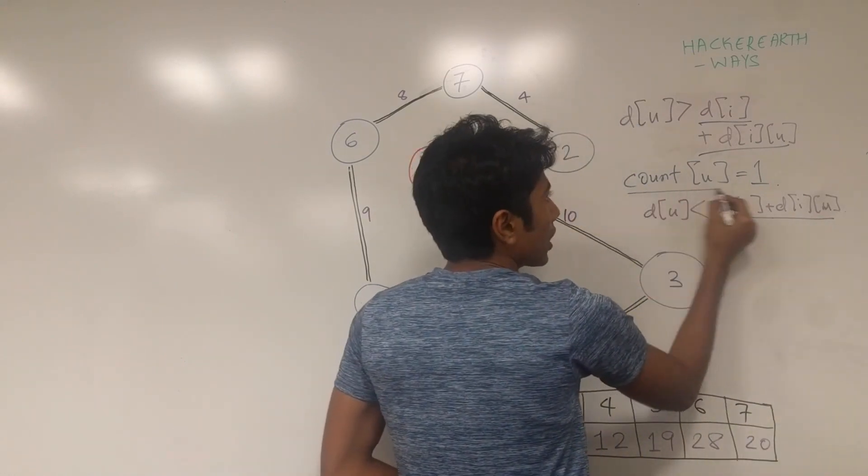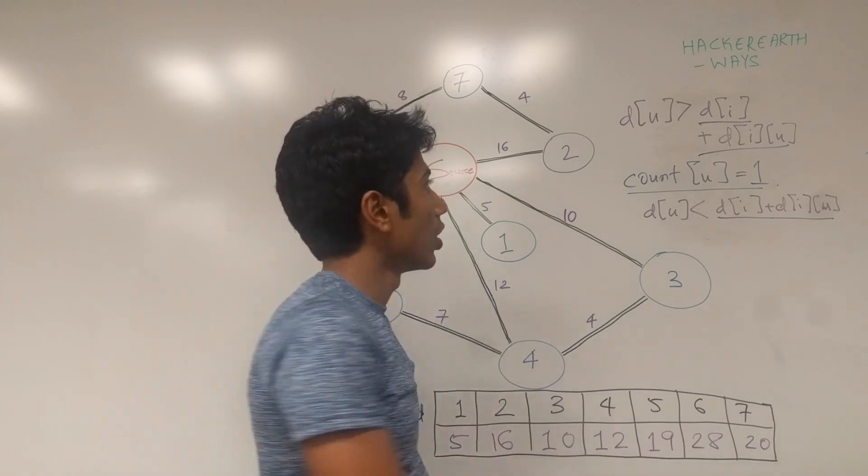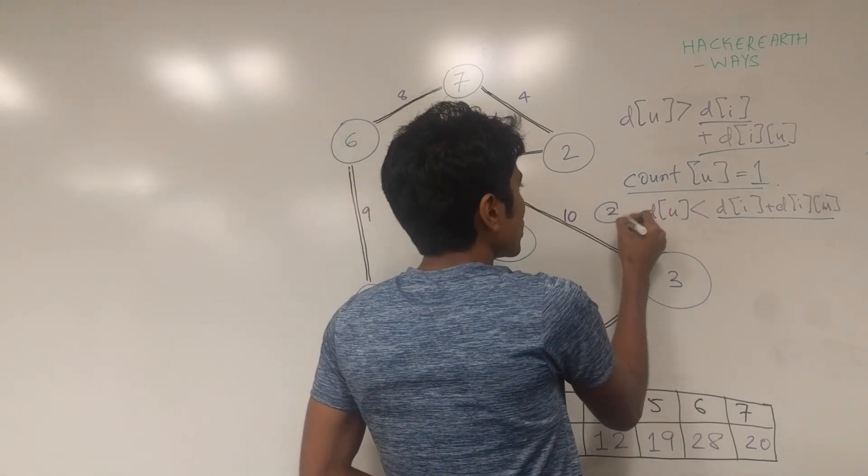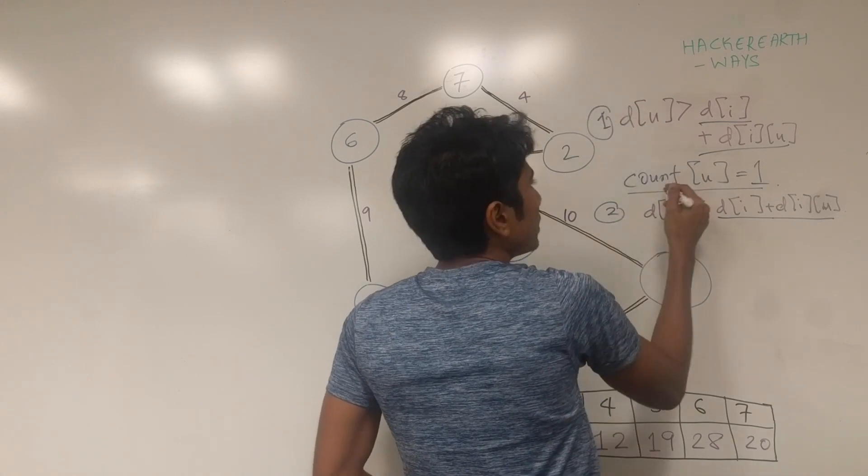This is not going to affect the count of the number of shortest ways that we have because this is not the shortest way. So this is the second condition. Nothing happens to count. First condition, this is what happens to count.